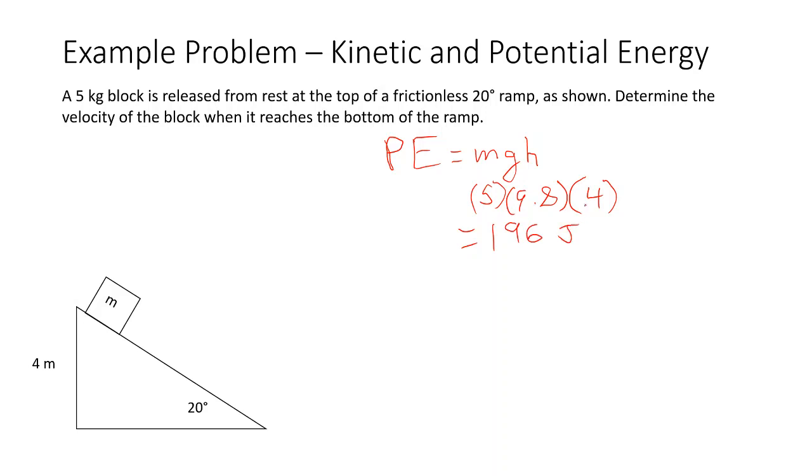Okay, so all of that energy, those 196 joules are conserved. So when we reach the bottom of the ramp, when our block gets down to here, it's no longer going to have any potential energy. We're going to be at a height of zero. So that means all of our energy is going to be in the form of kinetic energy, which means that our initial potential energy, call that PE initial, is equal to all of our final kinetic energy, KE final.